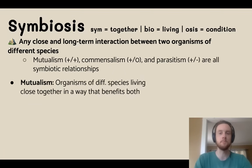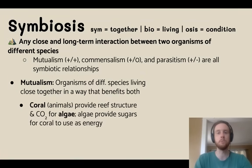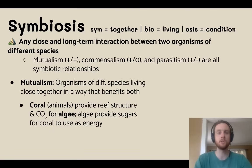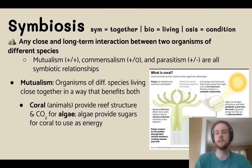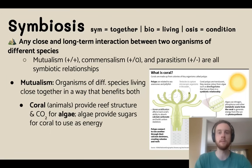Now we'll focus on mutualism, which is a form of symbiosis that benefits both species. Both species come away from this relationship better off than they would have been without it, and in many cases they depend on each other to an extent that they couldn't really survive apart. A great example is the coral reef ecosystem. Coral are actually tiny animals that create the reef structure algae rely on for a home. They provide carbon dioxide for the algae to do photosynthesis, and in return the algae provide sugars via photosynthesis that the coral use for energy.